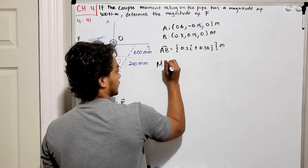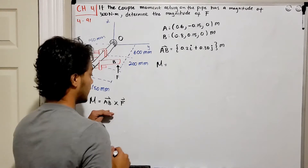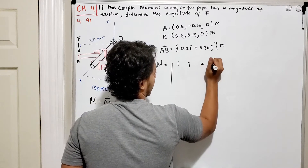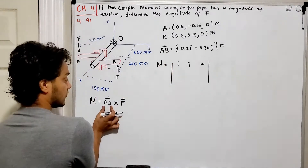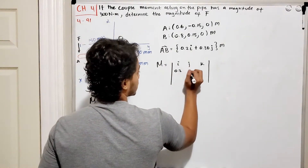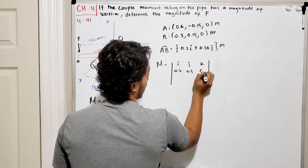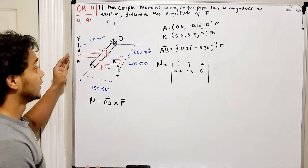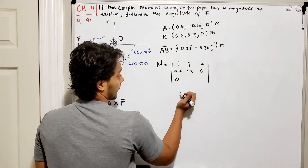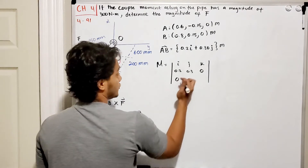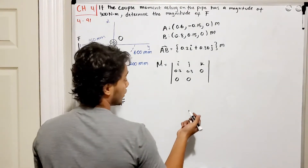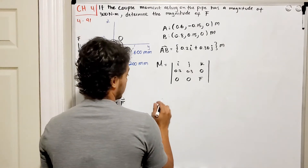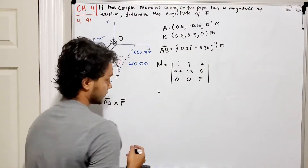Following the equation, the moment is equal to the cross product of AB and force F. I set up the i, j, k matrix: the first row for vector AB is 0.2 in the i-direction, 0.3 in the j-direction, and 0 for k. For force F, it acts only in the z-direction, so I have 0 in i, 0 in j, and magnitude F in the k-direction.